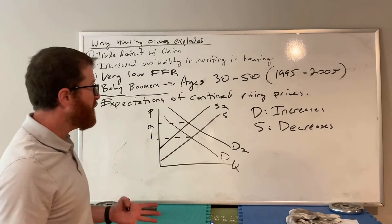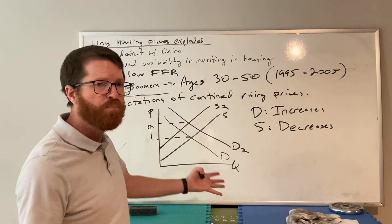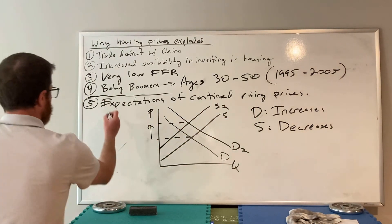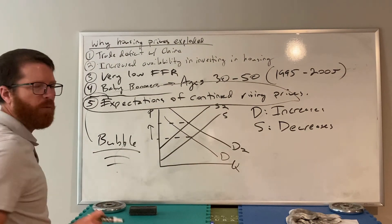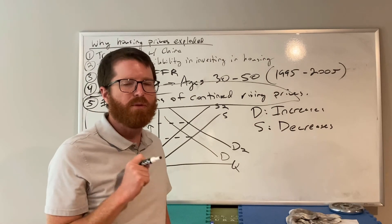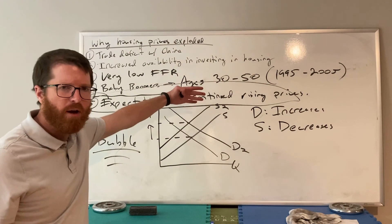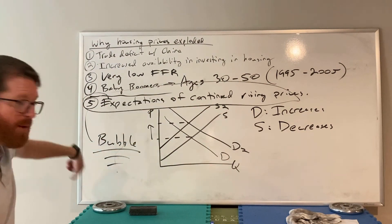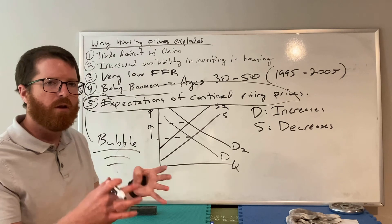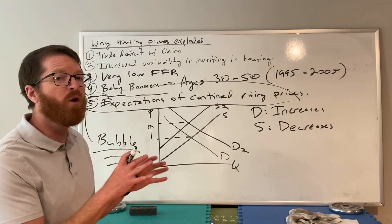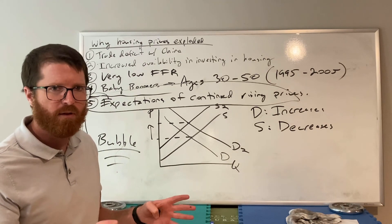Basically we have a recipe for disaster - a huge bubble in the housing market. A bubble is when prices go up merely because of speculation and expectations, and that's exactly what was happening here. Housing prices had been going up because of those four reasons, people became accustomed to that, which caused prices to go up even further, inflating the bubble larger and larger. This creates a perfect storm in the housing market, which will create an entire crisis in the banking system.